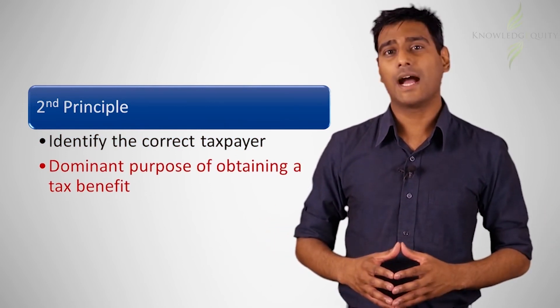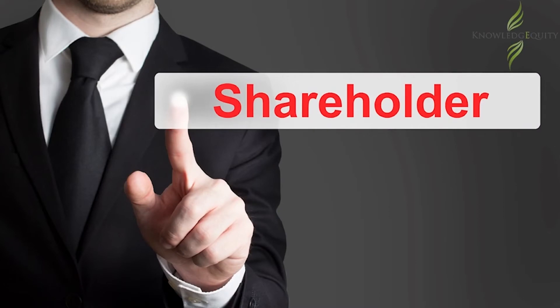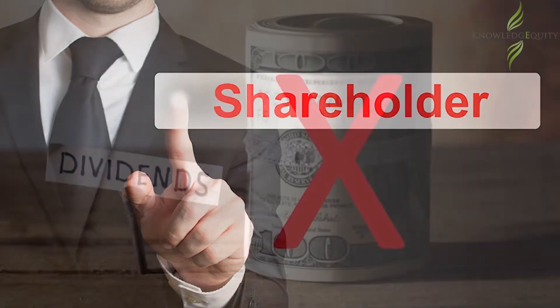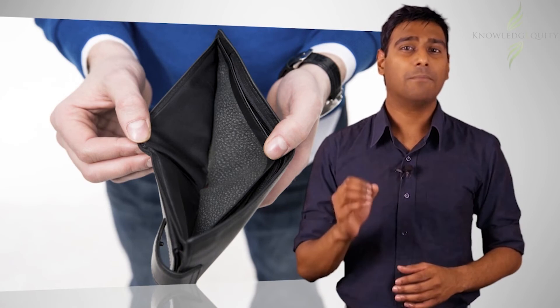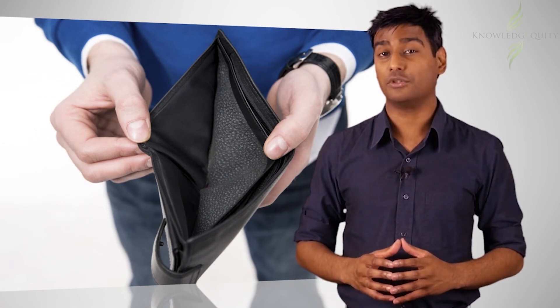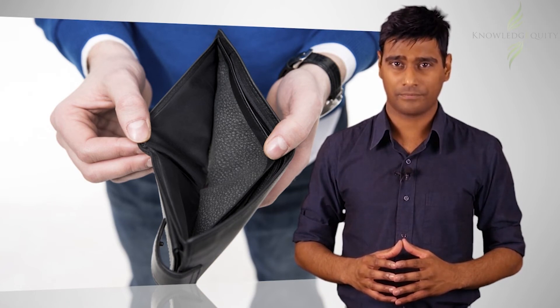For instance, take a hypothetical individual taxpayer that owns 100% of a company and assume that the company does not distribute its profits in the form of dividends every year. The company undertakes some tax minimization actions, that is a scheme, to eliminate its assessable income for the year. If the tax office brings a Part 4a action against the individual taxpayer, they might not be able to show that the individual taxpayer had any reduction of income for the financial year.